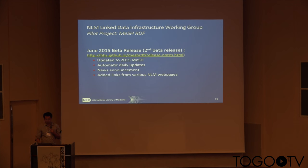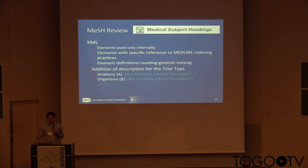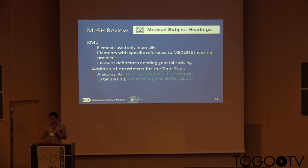Here is a general review of MeSH. If you do literature indexing, you must be familiar with MeSH. It has 16 categories — there's a chemical category, disease category, clinical treatment, and so on. Those terms are well defined and included in this vocabulary.